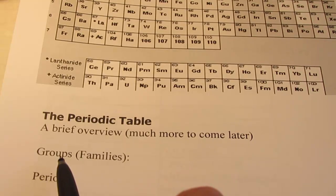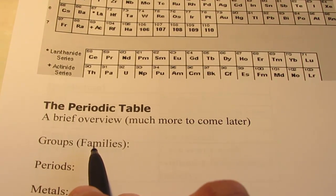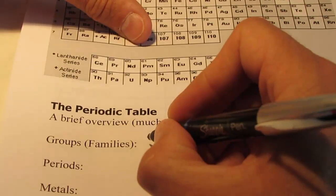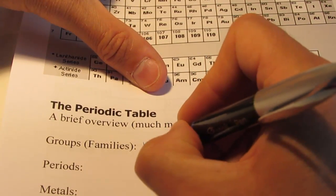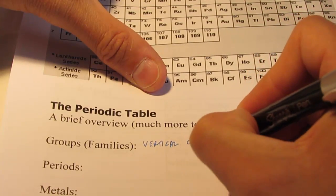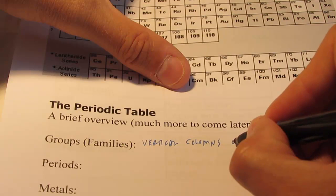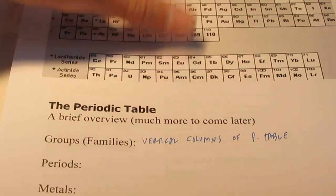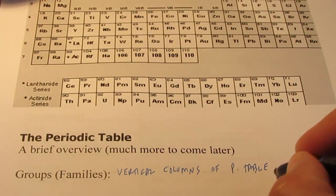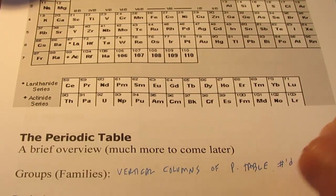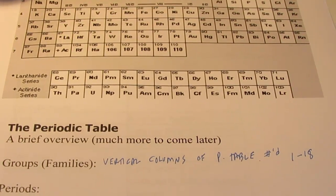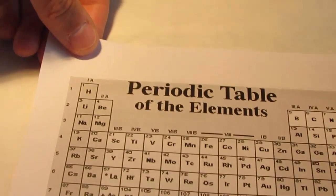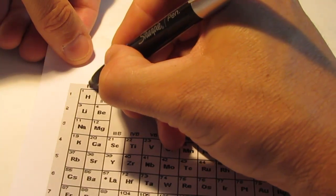Now, you'll often hear me use the word group or family when I refer to the periodic table. When I use the term group or family, keep in mind that these are the vertical columns of the periodic table.